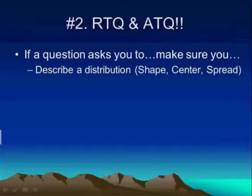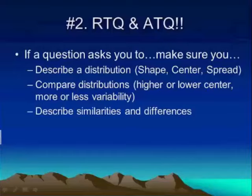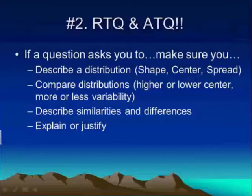That's a prompt that students should know by the end of the course. If the question asks students to compare distributions, then it needs to be comparative — which one has a higher or lower center, which distribution has more or less variability than the other. If the question asks you to describe similarities and differences, that's what's expected. If the question asks you to explain or justify, then obviously that's something you need to do to get full credit.